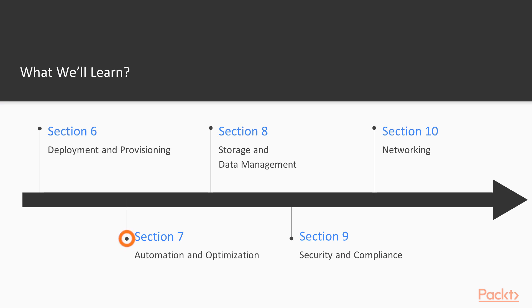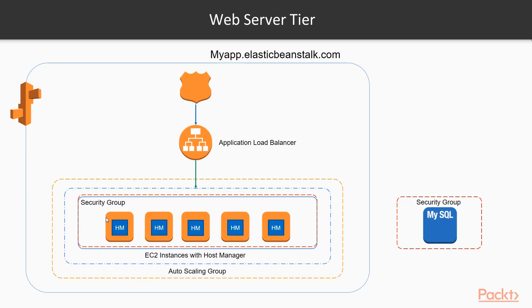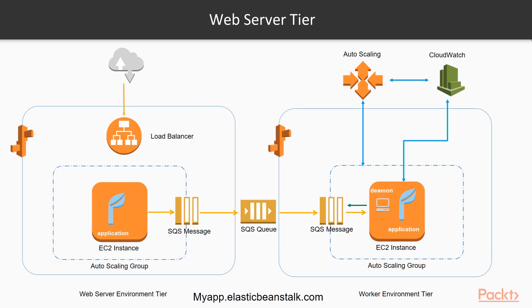In section seven, we'll move on and take a look at automation and optimization. You'll learn how to deploy repeatable, predictable and highly effective applications using AWS automation tools and services. We'll learn how to avoid issues related to configuration drift and ensure fast turnaround times for your business applications.